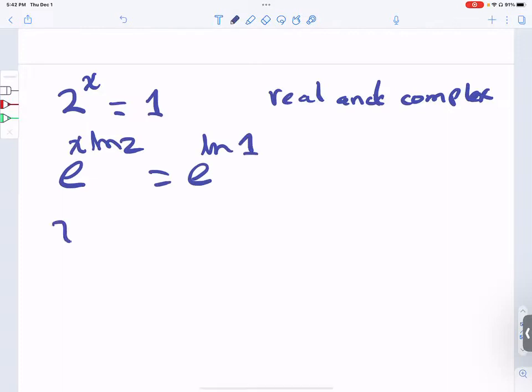From here, we get that x must equal the exponent: x times ln of 2 equals ln of 1, so x equals ln of 1 divided by ln of 2.